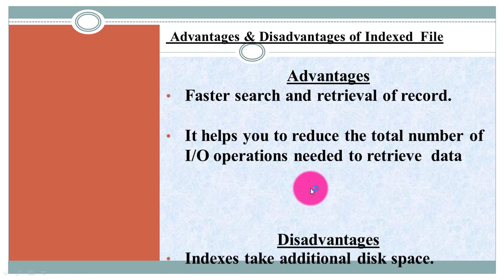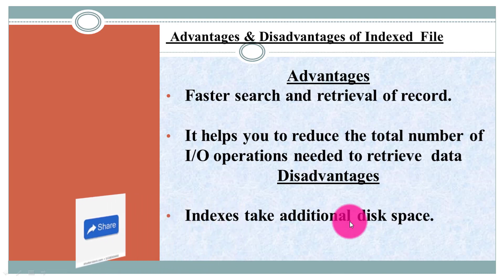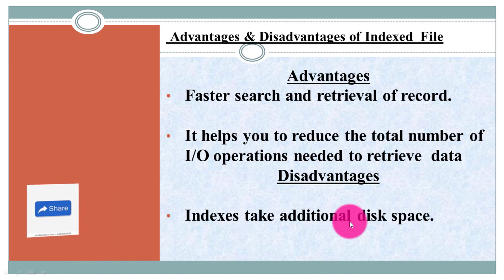The disadvantage of indexing is that the index takes additional disk space. Indexing is an optional mechanism but it is an additional data structure that requires extra storage. It is metadata — data about data. The system has to store these additional files and they require disk space. That is the main disadvantage of indexing.